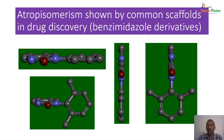For the benzimidazole derivative, the moiety is actually perpendicular to one of the rings — the deviation is very high. These are completely isolable atropisomers. We must be very careful in using these kinds of scaffolds in drug discovery.